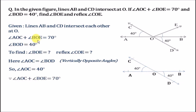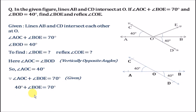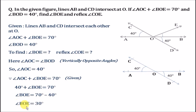Since the sum of angle AOC and angle BOE equals 70 degrees, and we now know angle AOC is 40 degrees, putting the value in: 40 degrees plus angle BOE equals 70 degrees. Taking 40 degrees to the right, angle BOE equals 70 minus 40, which gives us 30 degrees. Hence the value of angle BOE is 30 degrees.